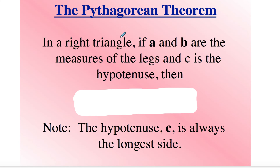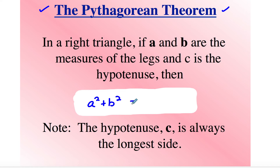In a right triangle, if A and B are the measures of the legs and C is the hypotenuse, then — and you've probably all heard of the Pythagorean theorem — it means that A squared, which is a leg, plus B squared, which is also a leg, is equal to C squared. The hypotenuse C is always the longest side.